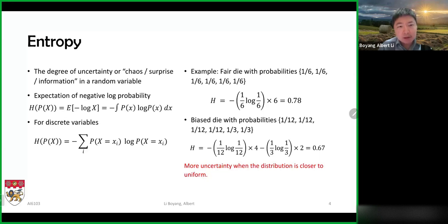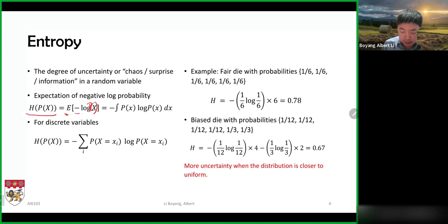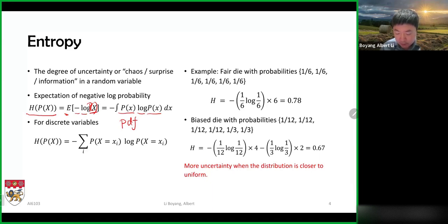Now let's dive into the mathematics. Entropy is the expectation of negative log probability. If you have a random variable x, the entropy of this random variable — which depends on its distribution — is the expectation of the negative logarithm of the probability. For a continuous variable, we use the probability density function; this expands as the negative logarithm of the probability under distribution p(x). For discrete variables, things are very similar: replace the integral with a summation sign and replace the pdf with the pmf, the probability mass function.